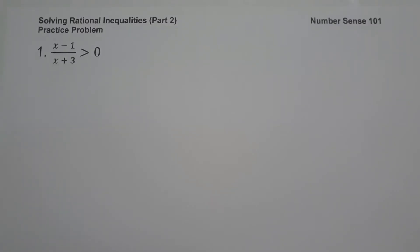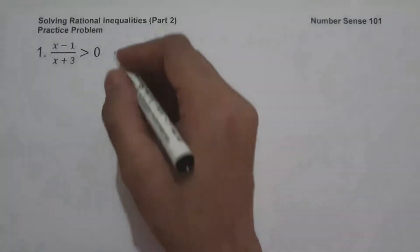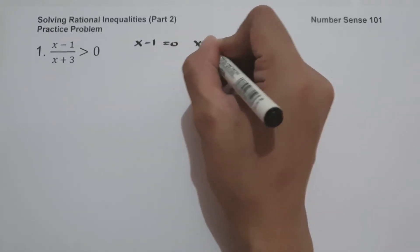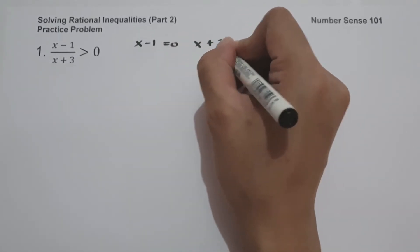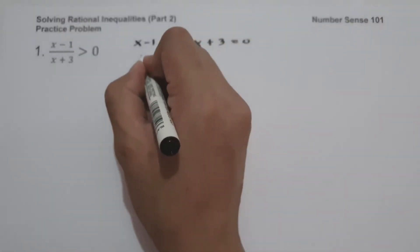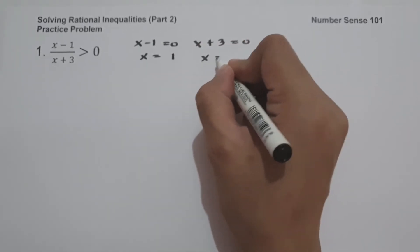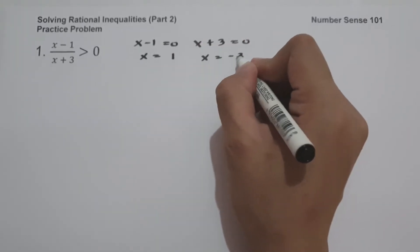On the first example, we have (x minus 1) all over (x plus 3) greater than 0. Since one side of the inequality is already equal to 0, all we have to do is to equate x minus 1 equal to 0 and x plus 3 equal to 0. So x is positive 1 and x equals negative 3.